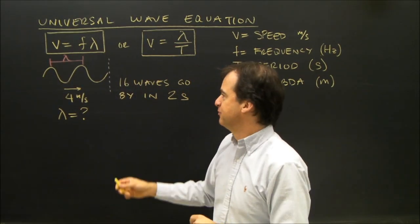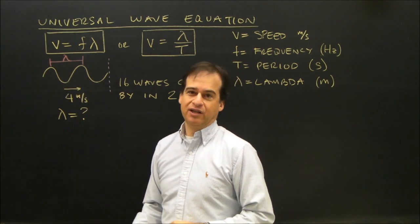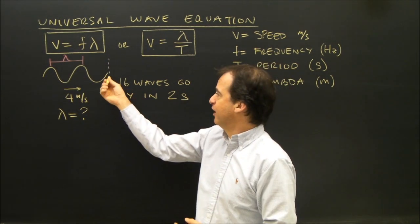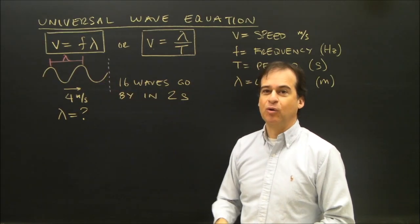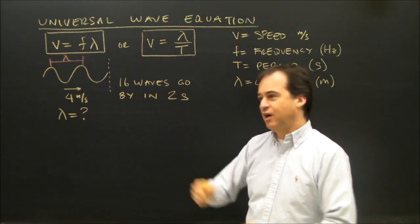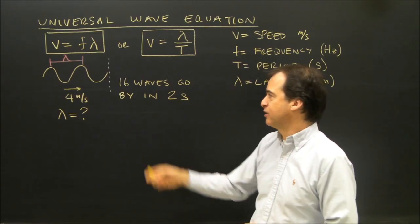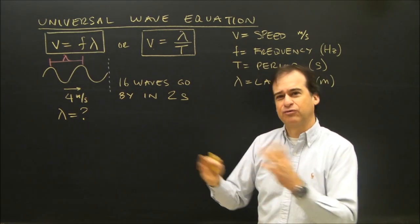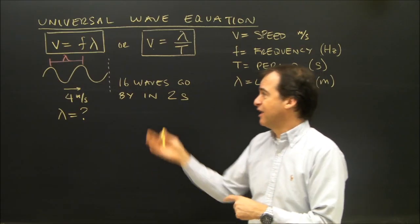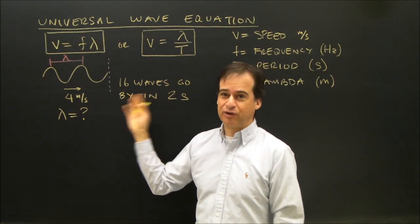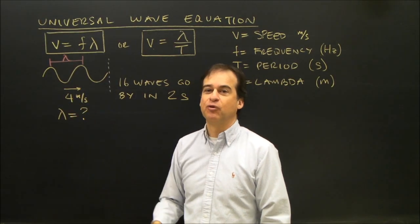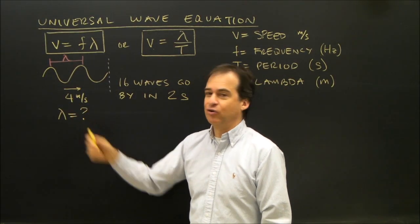So let's do a simple problem. I've got a wave traveling in, let's say, a pool. And I notice that I'm sitting there watching the waves and 16 waves go by in two seconds. So I time them and I look and the waves are moving very quickly, 16 go by in two seconds. As soon as I hear something about how long it took for a number of things to happen, I'm thinking that information is period or frequency information. I'm also told that the waves were going at four meters per second, and I want to know the wavelength.